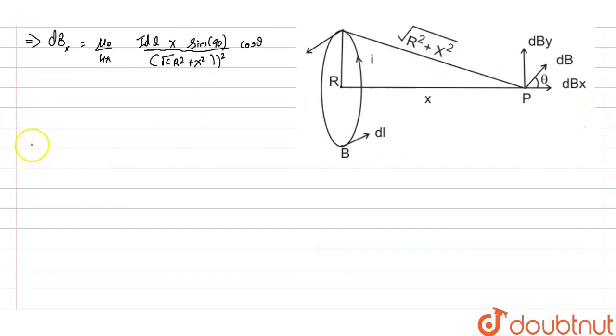Solving this further, we get dBₓ as μ₀/(4π) I dL times R / (X² + R²)^(1/2), or basically the square root.